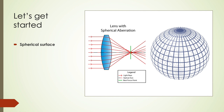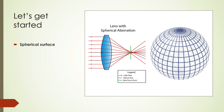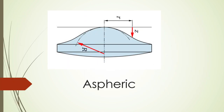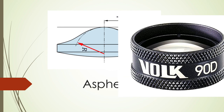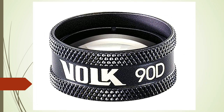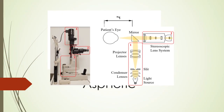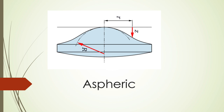If the peripheral rays focus in front of the paraxial or central rays, it creates a positive spherical aberration, and if they focus behind, a negative spherical aberration is created. To counteract spherical aberration, modern optical lenses — whether diagnostic lenses like the 90D lens or those incorporated into equipment like the slit lamp optics — or some intraocular lenses are created with an aspheric surface.